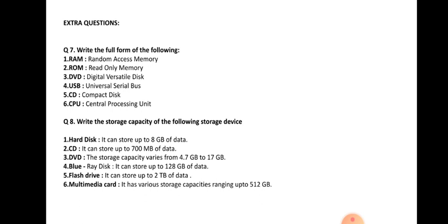Write the storage capacity of the following storage devices. Hard Disk: it can store up to 8 TB of data. CD: it can store up to 700 MB of data. DVD: the storage capacity varies from 4.7 GB to 17 GB. Blu-ray Disc: it can store up to 128 GB of data. Flash Drive: it can store up to 2 TB of data. Multimedia Card: it has various storage capacity ranging up to 512 GB.